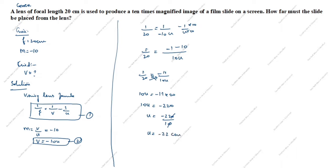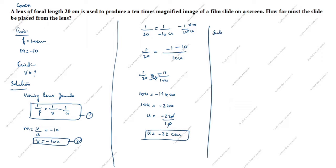But we need to find the value of v. We will substitute the u value into the second equation. Substituting u equals minus 22 centimeter: v equals minus 10 into minus 22, which equals plus 220 centimeter.